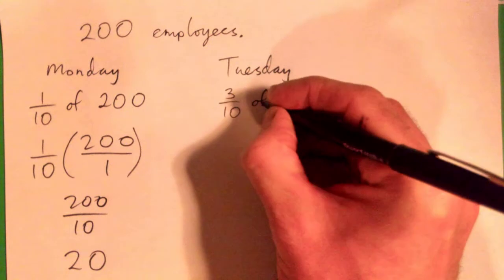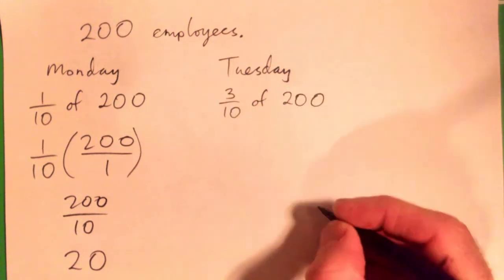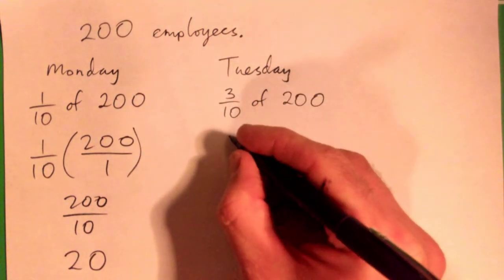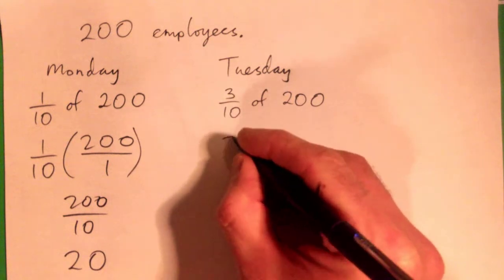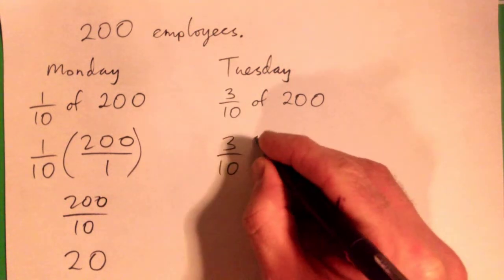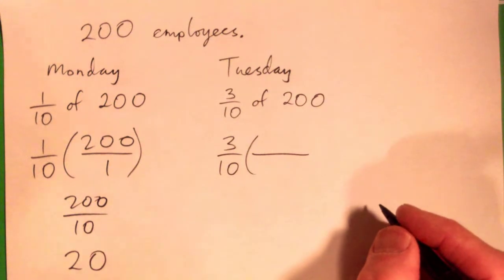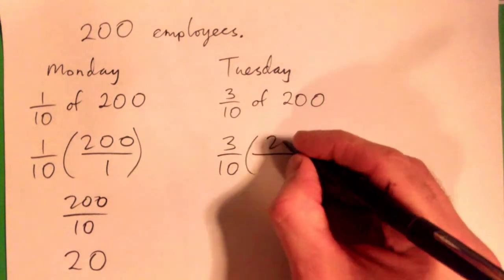So three-tenths of 200. And 'of' means multiply. So we go three-tenths times—turn 200 into a fraction, 200 over 1. Lovely.